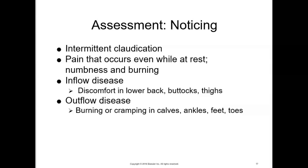Those with rest pain often have advanced disease that may result in limb loss. Inflow obstructions involve the distal end of the aorta and the common internal and external iliac arteries, located above the inguinal ligament. Patients with inflow disease have discomfort in the lower back, buttocks, or thighs. Outflow obstructions involve the femoral, popliteal, and tibial arteries and are below the superficial femoral artery. Patients with outflow disease describe burning or cramping in the calves, ankles, feet, and toes.